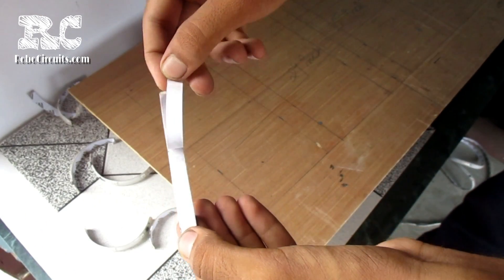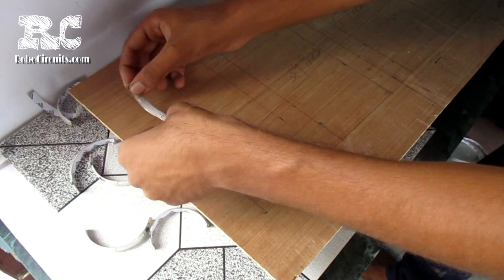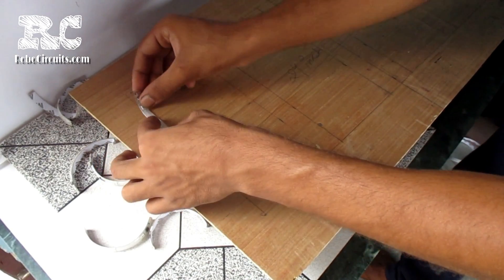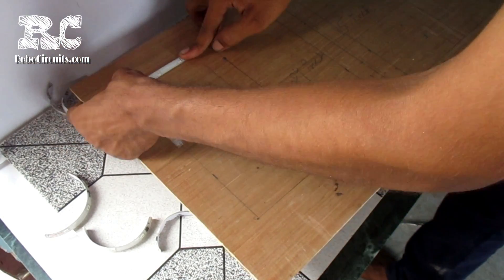Then I peeled off the glue guard from the back and stuck it on the board. Make sure the data in and the data out pins are correctly aligned and the pattern must be same as I am doing.